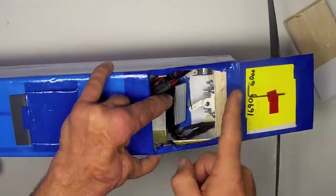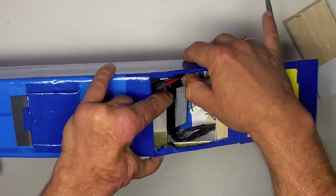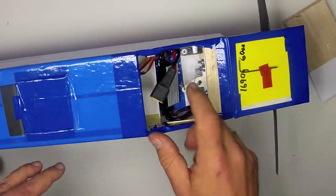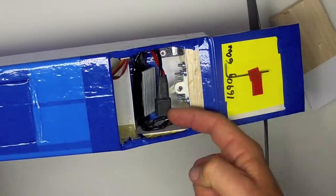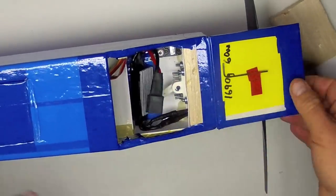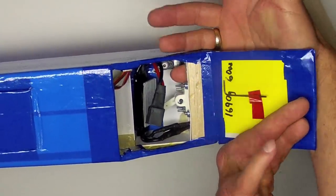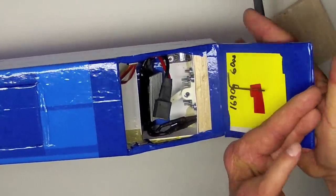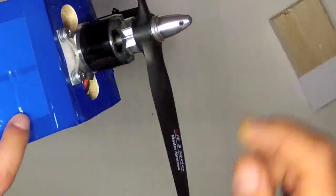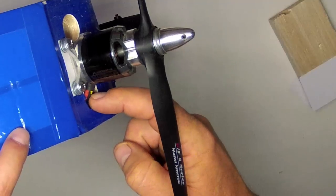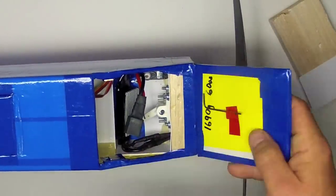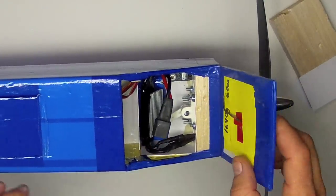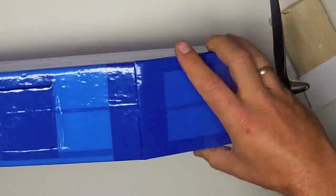Right behind that is the Turnigy Trust 55 Amp Speed Controller, and that is placed in front of these cooling holes that are placed through the front of the firewall and through which the speed controller wires pass right here. So these holes allow cooling air in the front, and of course the exit for the cooling air must be provided.